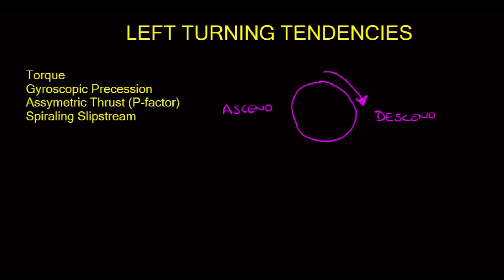Asymmetric thrust, or P-factor, is only experienced at high angles of attack. So how does this work? The descending blade creates a higher angle of attack than the ascending blade. What does that do?